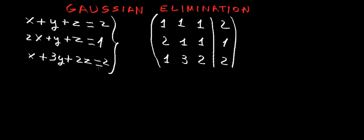The first step is to convert our system of simultaneous equations, with our normal equations with x's, y's, and z's, into a matrix. This is called the augmented matrix.